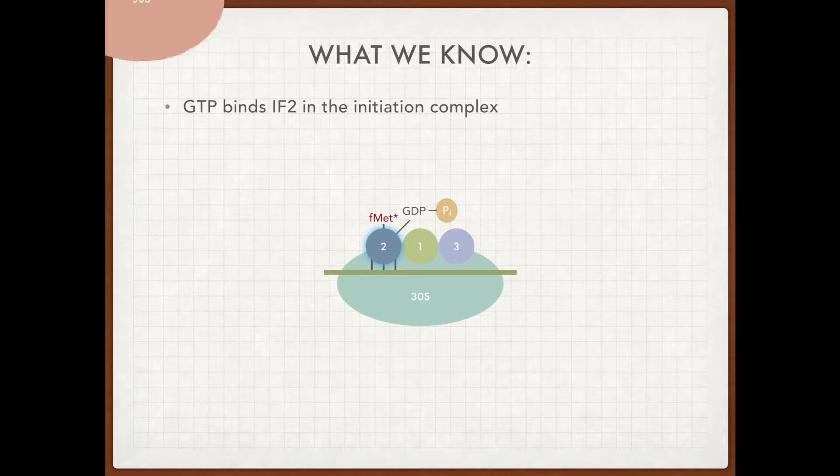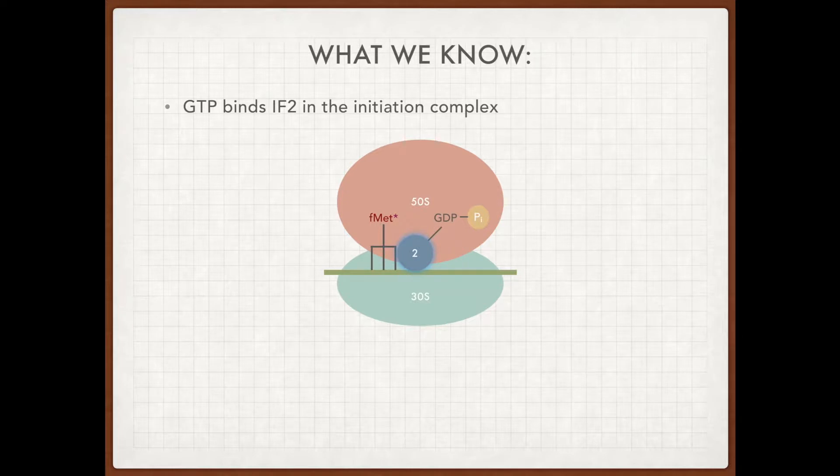Then the 50S subunit's recruited to the complex and IF1 and IF3 are expelled. We also know from past experiments that 50S and IF2 together demonstrate GTPase activity, meaning that the GTP can be hydrolyzed in the presence of both IF2 and 50S.